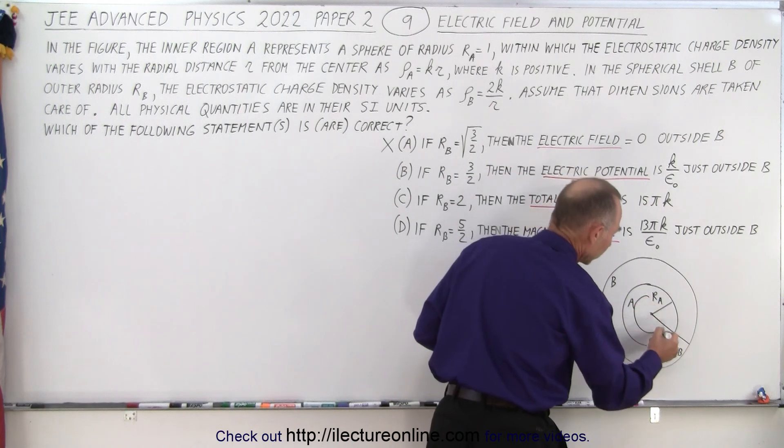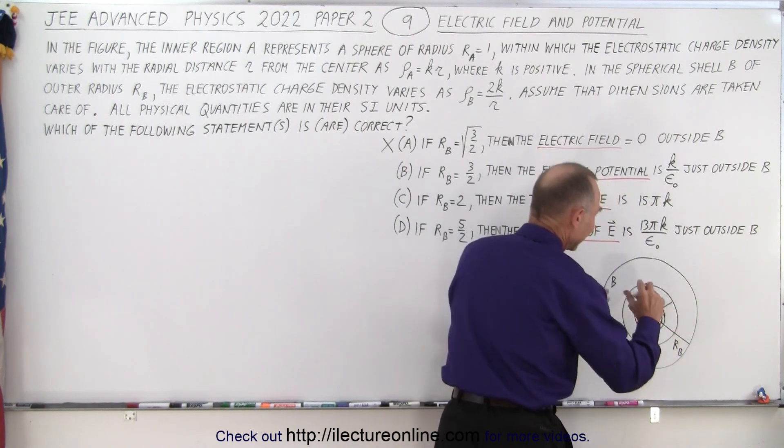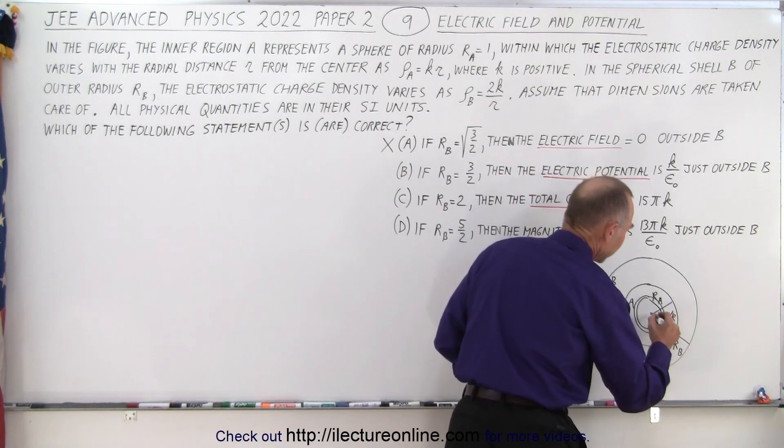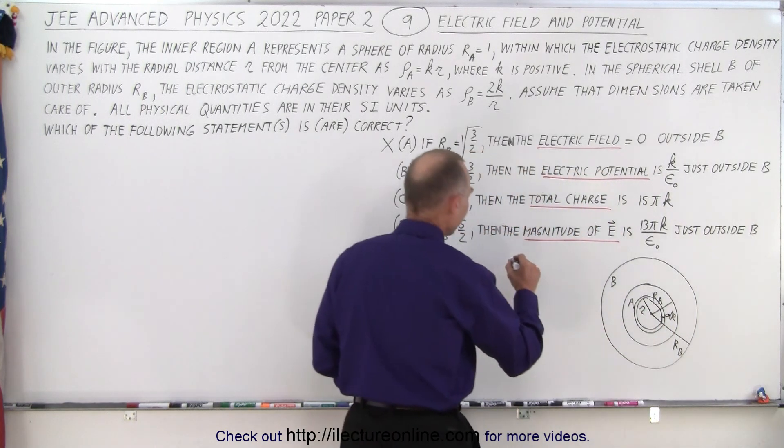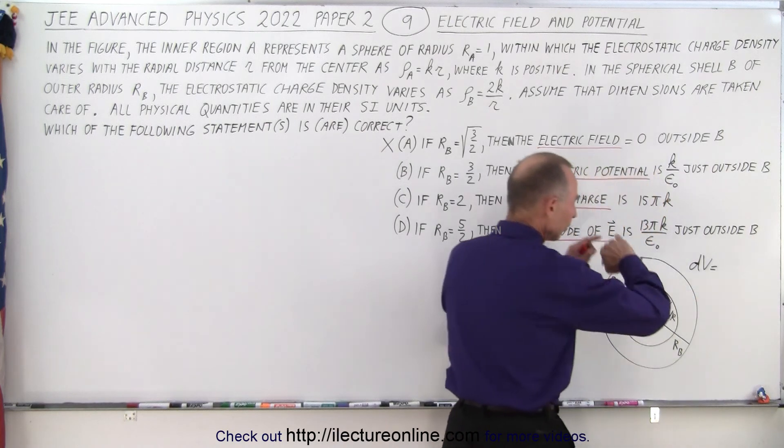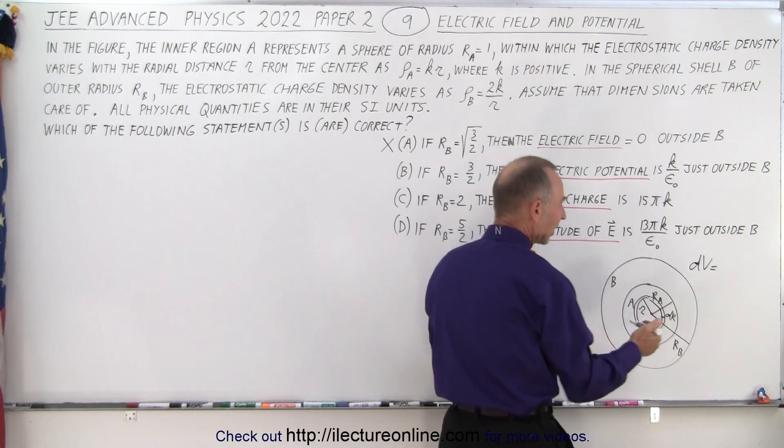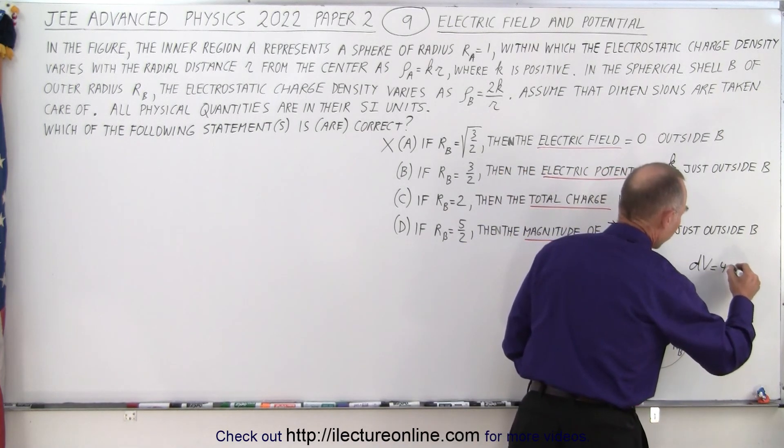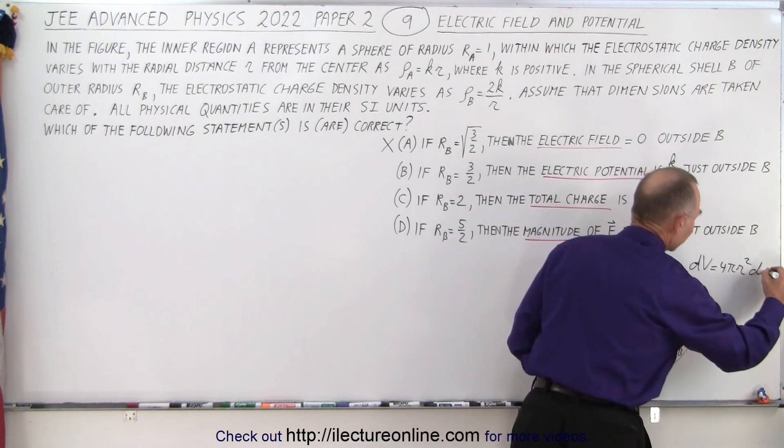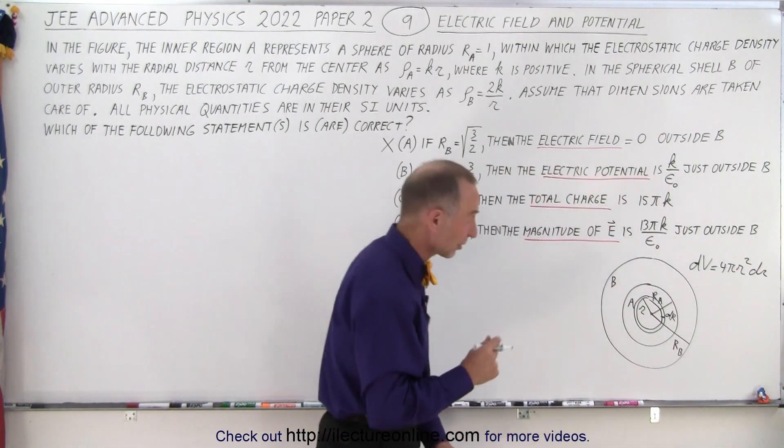To do that, we're going to have a small spherical shell inside with thickness dr, distance from the center as R. So we can say that dV of that shell is equal to the surface area of that little shell, which is 4 pi r squared, times the thickness which is dr. So that's the volume of one of those little spherical shells.